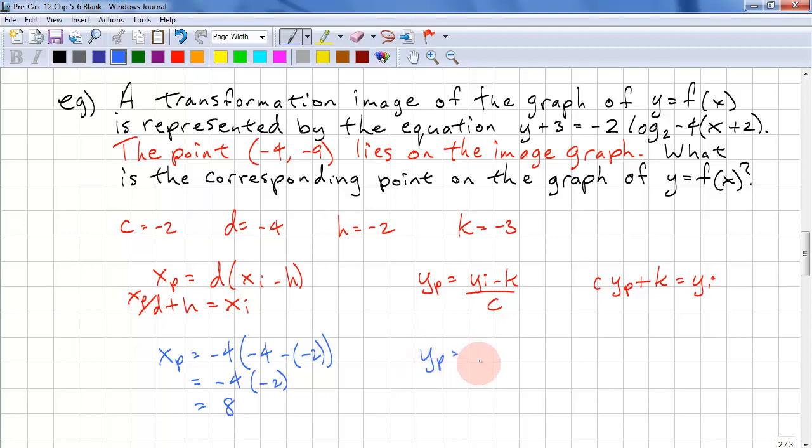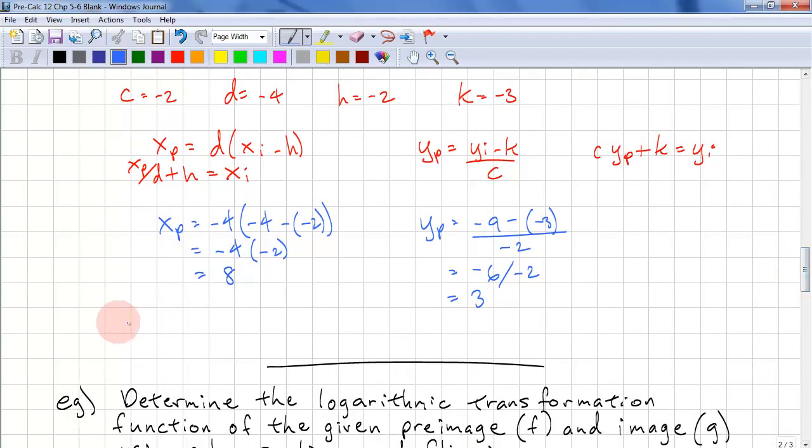For y_p, we have (negative 9 minus negative 3) over negative 2. That's negative 6 over negative 2, and that is 3.